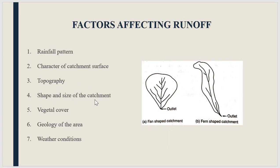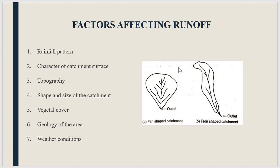The fourth factor is shape and size of the catchment. You can see a figure here showing two shapes of catchment area — one is a fan-shaped catchment and the second is a fern-shaped catchment. Runoff will be more if the catchment is large and fan-shaped, because all the sub-streams will be very near to the main channel, and without much loss, excess water can reach the outlet very quickly.